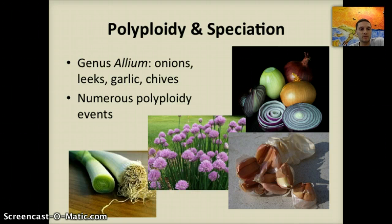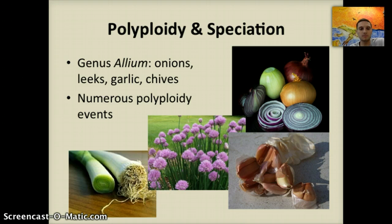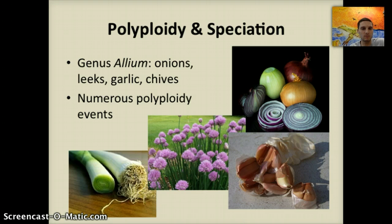To finish examining polyploidy, we look at the genus that contains onions, leeks, garlics, and chives. Determining the number of species is often difficult due to numerous polyploidy events within a genus, which can create large numbers of reproductively isolated but otherwise similar populations occurring through asexual reproduction. Polyploidy sometimes gives an advantage over diploids under certain selective pressures. This genus was originally thought to be much larger in number of species, but when DNA evidence became available, many species were found to be incorrectly labeled.